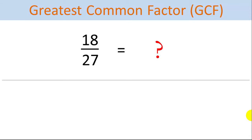Let's find the Greatest Common Factor of 18 and 27. If we want to reduce this fraction, the fastest and easiest way is to know the Greatest Common Divisor is 9. Then we can divide both the numerator and the denominator by 9 and reduce the fraction in one step to 2 thirds.